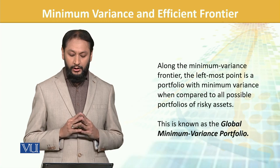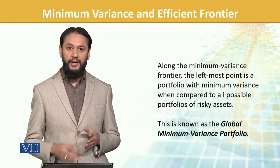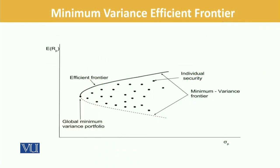That left-most extreme point is called the global minimum variance portfolio — it is the point that is globally optimal for all available assets in terms of minimum risk and return. Looking at the graph, we have expected return on one axis and standard deviation on the other. The starting point of the efficient frontier is the best possible combination at the lowest level of risk, which is the global minimum variance portfolio.